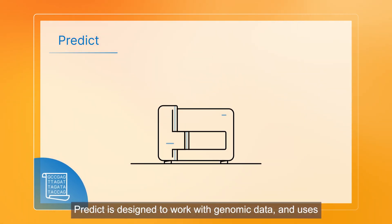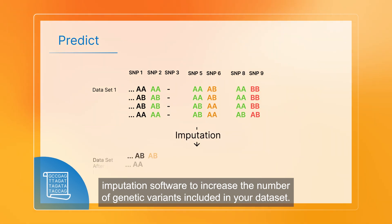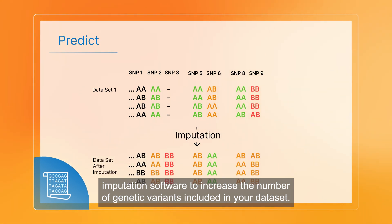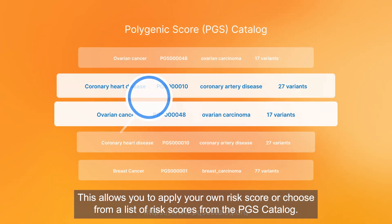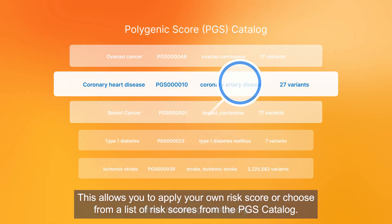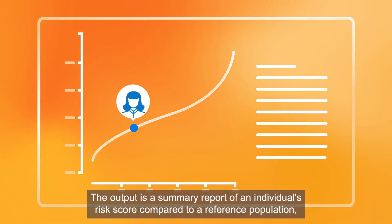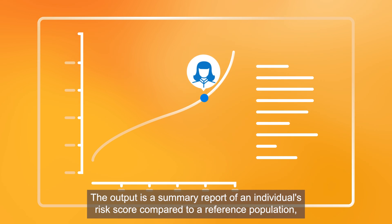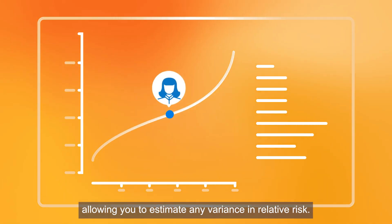PREDICT is designed to work with genomic data and uses imputation software to increase the number of genetic variants included in your data set. This allows you to apply your own risk score or choose from a list of risk scores from the PGS catalog. The output is a summary report of an individual's risk score compared to a reference population, allowing you to estimate any variants in relative risk.